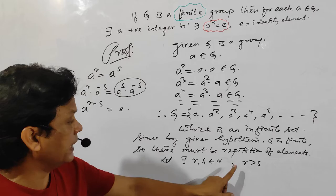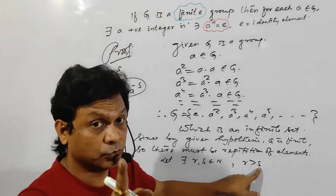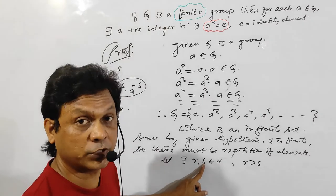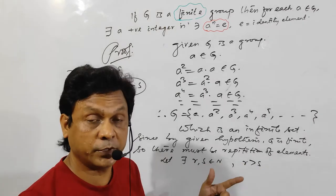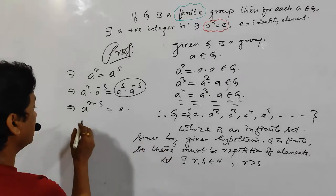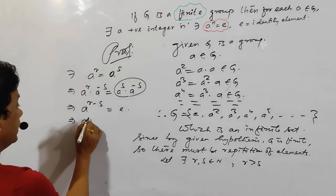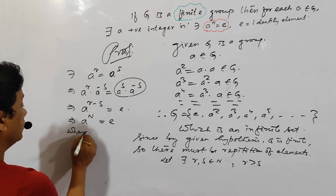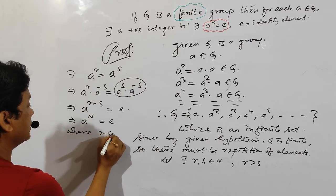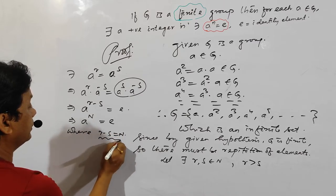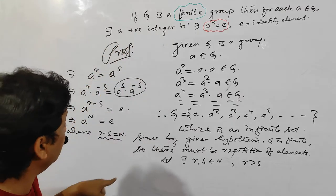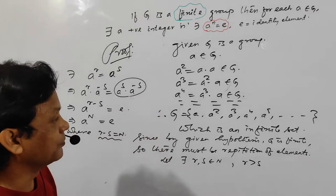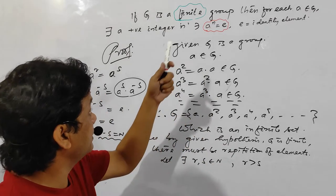Now r minus s: since r is greater than s, r minus s is a positive integer — that means it is a natural number. So a to the power n equals e, where n equals r minus s. This is the proof of this problem.